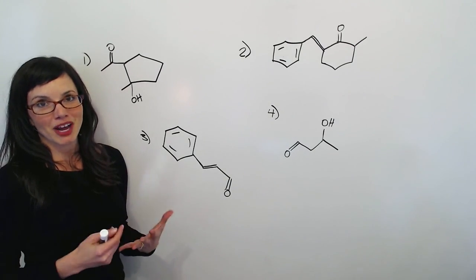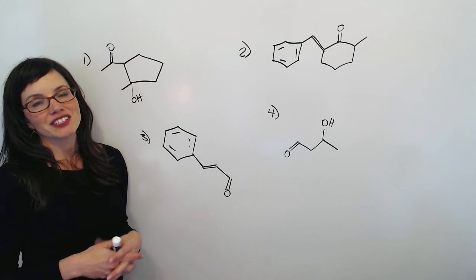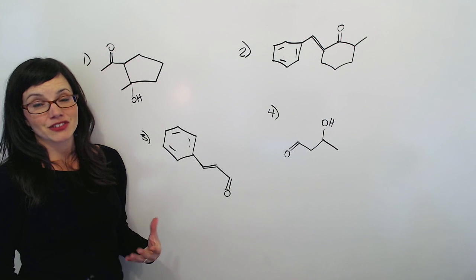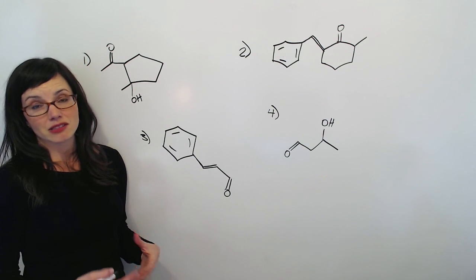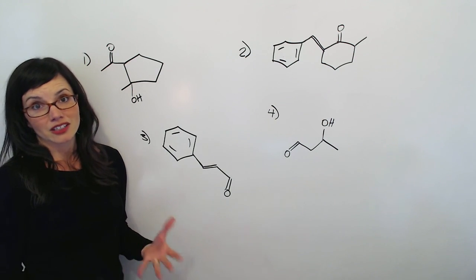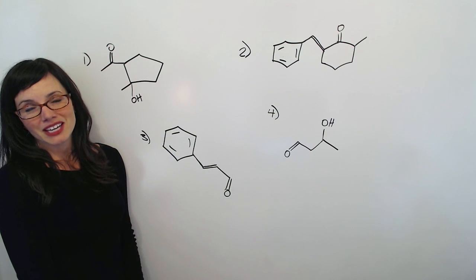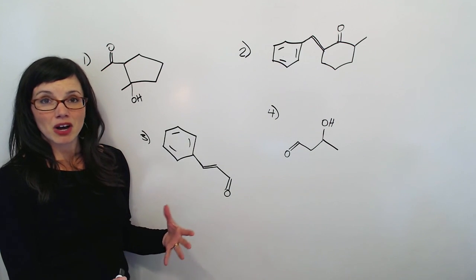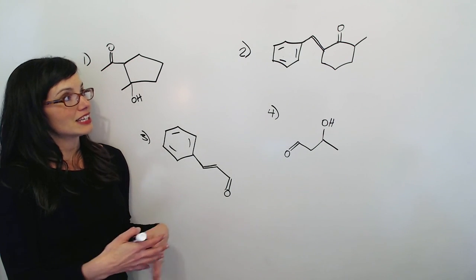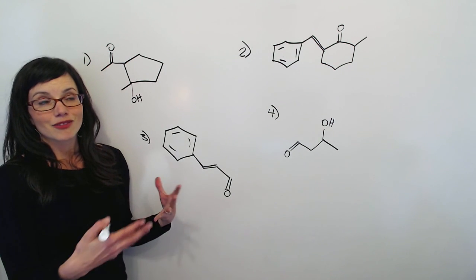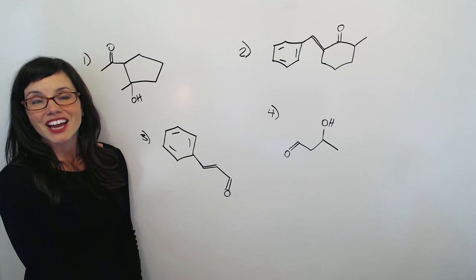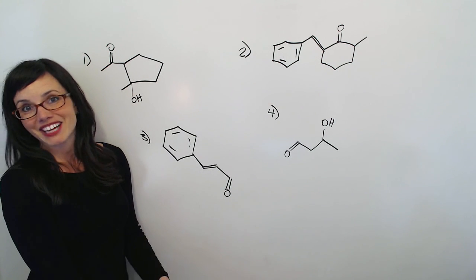Here are four more problems you can practice to confirm you've got these concepts down. Some of them are alpha-beta unsaturated condensation products done in heat or on conjugated systems, and some are beta-hydroxy addition products. Hit pause and complete the reactants and reaction conditions for all four of them, and then let's come back and compare.